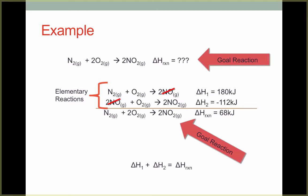So what actually happened here? Well, in elementary step one, our system gained 180 kilojoules of energy. But then in reaction two, our system lost 112 kilojoules of energy. So overall, our system gained 68 kilojoules of energy, 180 plus negative 112.